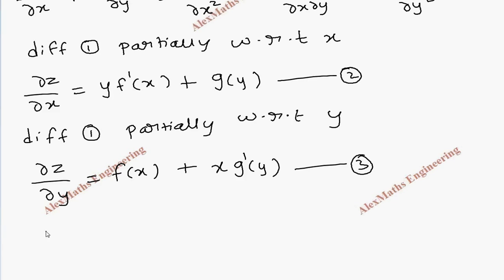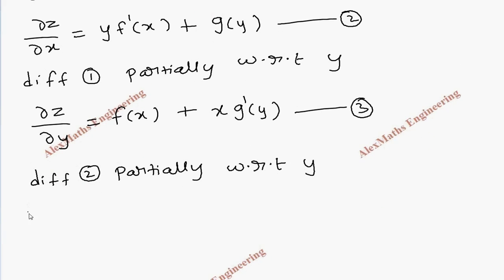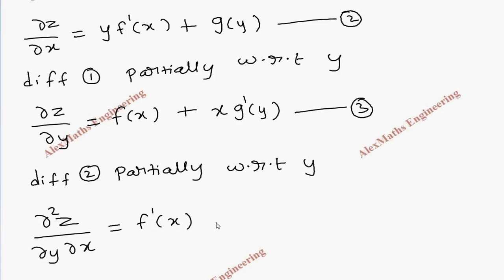Let's take the second expression and differentiate it partially with respect to y. So this will become dou square z by dou y dou x, and the y derivative is 1, plus f dash of x is a constant which stays as it is, and g becomes g dash of y. Let's keep this as the fourth expression.